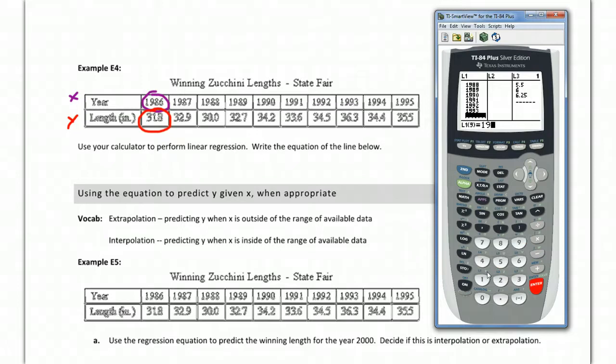Then you go over to your list two and you're going to type in the length, in this case the y value. So 318 is our first y value. You'll notice that if you look across here, 1986 lines up with 318, just like they line up over here.